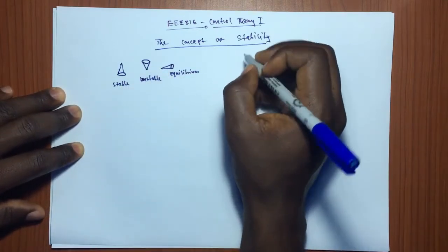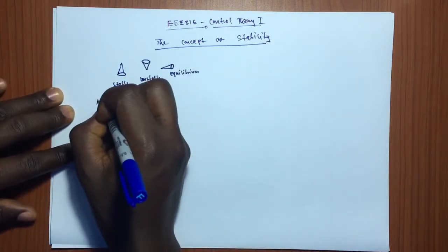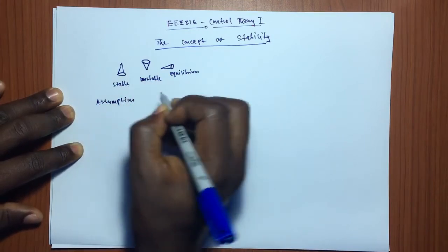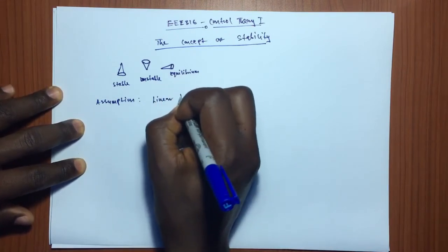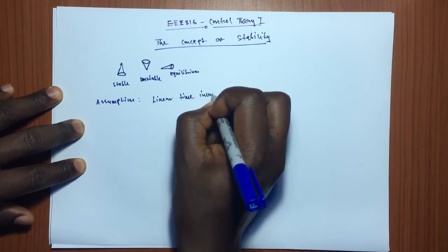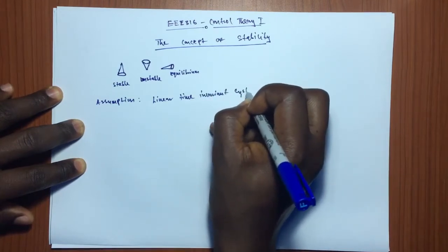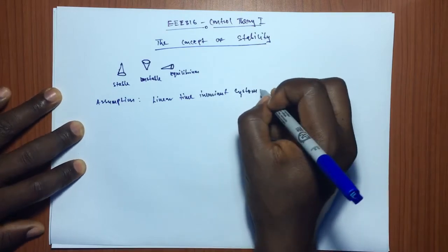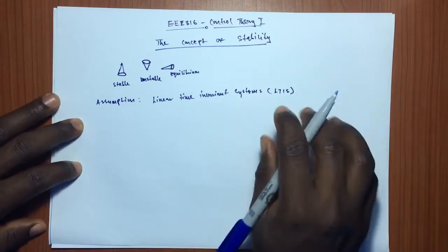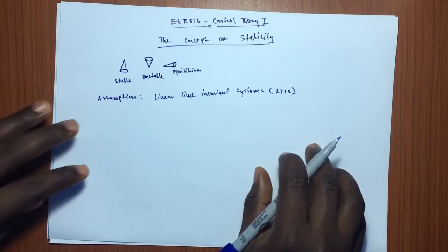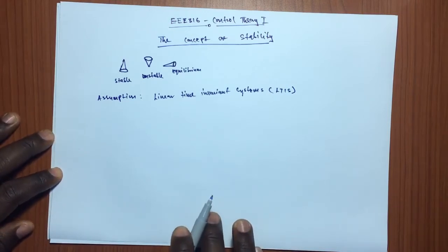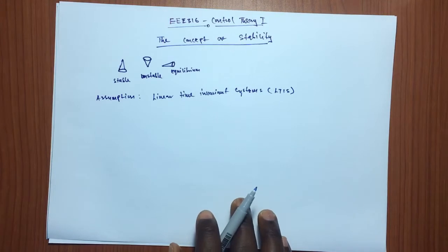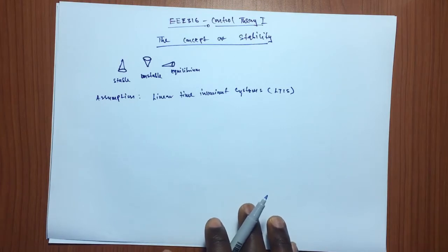We're going to make an assumption that we'll be dealing with linear time invariant systems — LTI systems. A system is considered stable if a small change in system inputs, initial conditions, or system parameters does not result in a large change in system output. Now I'm going to give you a few conditions required for stability.